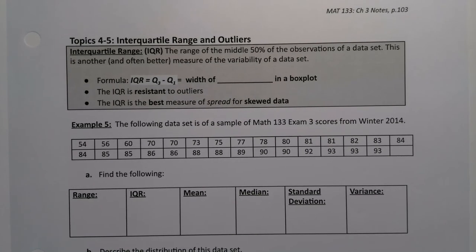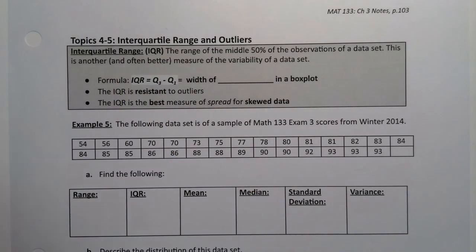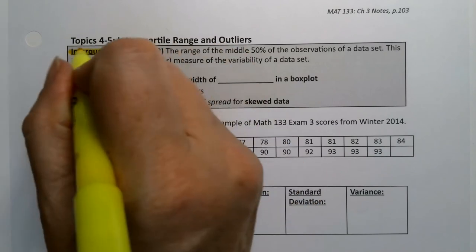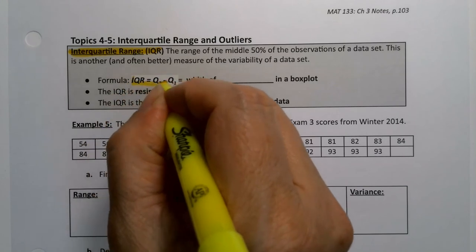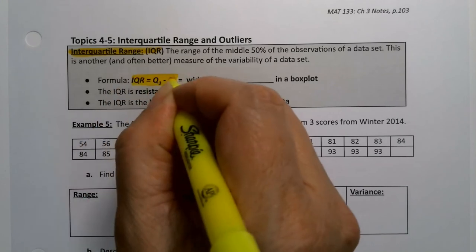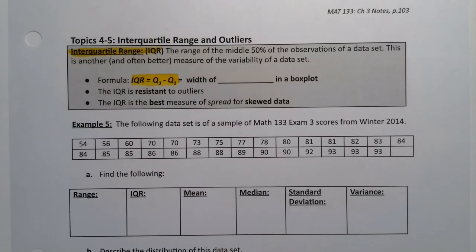As we previewed before, we want to talk about the interquartile range and outliers. So technically interquartile range is how we find outliers. The IQR interquartile range is the range, the higher minus the lower of the quartiles. So the formula, you take Q3 and you subtract Q1.